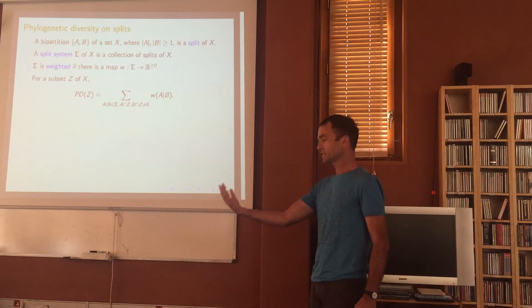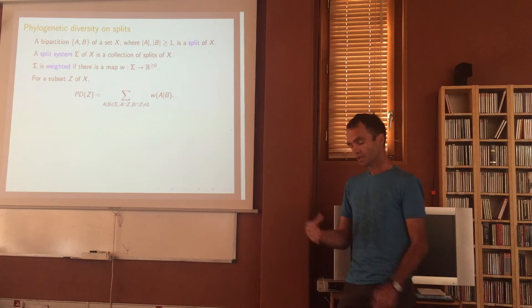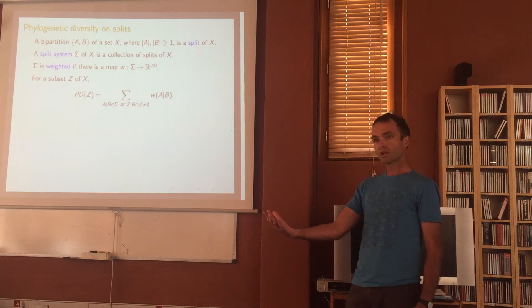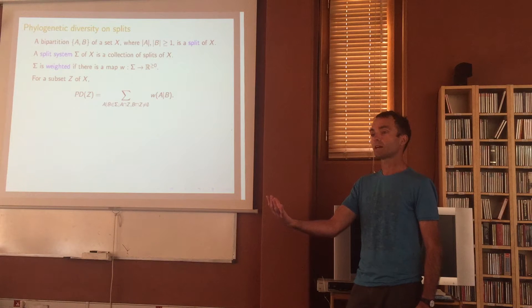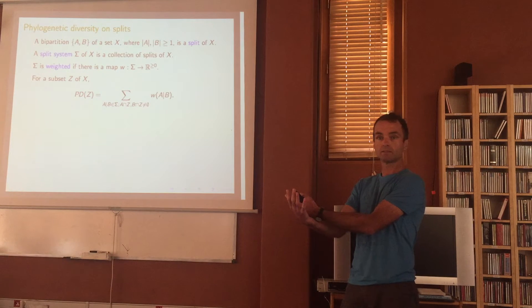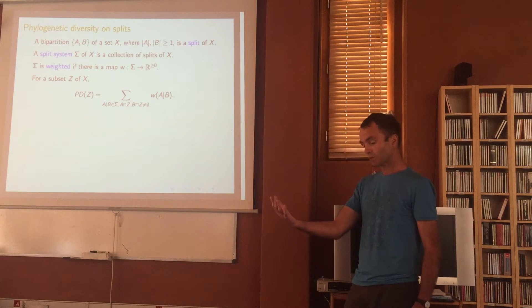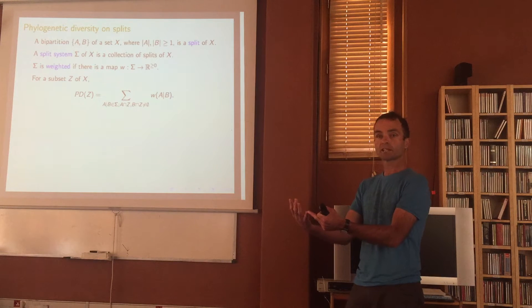I'm going to take some character — whether a species might have wings or no wings — and divide the species into two groups, A and B. That's called a split. A may be the ones with wings and B may be the ones with no wings. It could be something as simple as that, or something more complicated — a certain nucleotide at a particular site in the DNA sequence.